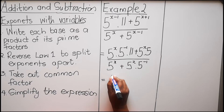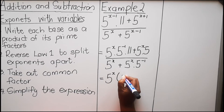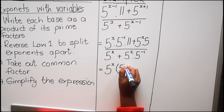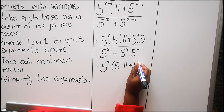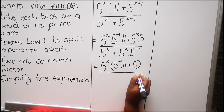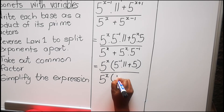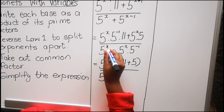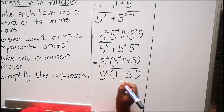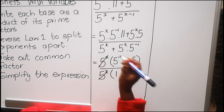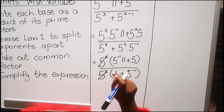The common factor on the top part is 5 to the power x. Then for the first term we are left with 5 to the power minus 1 times 11, plus 5, divided by 5 to the power x. Then we have 1 — because 5^1 times 1 would give you 5 to the power x. Then for the next term it is 5 to the power minus 1. That will cancel, and then we are left with 5 to the power minus 1, which gives me 1 over 5.